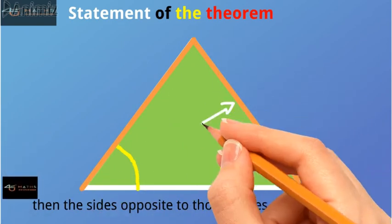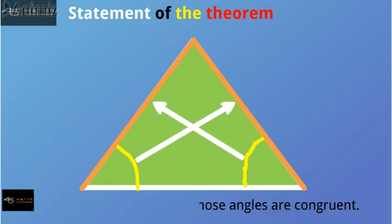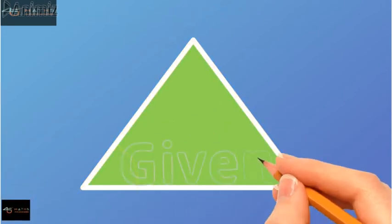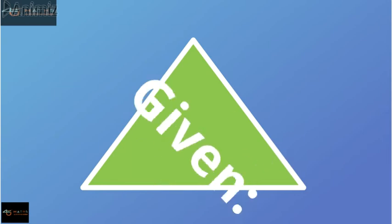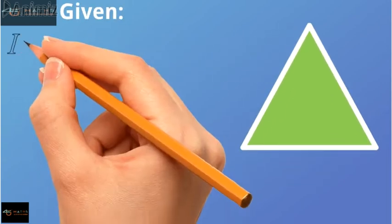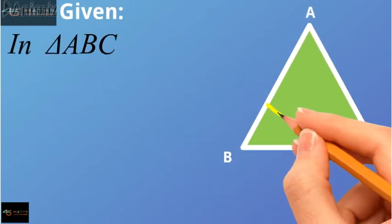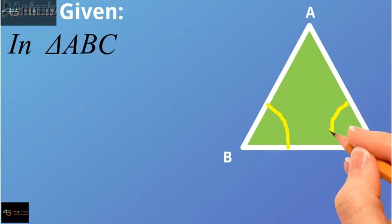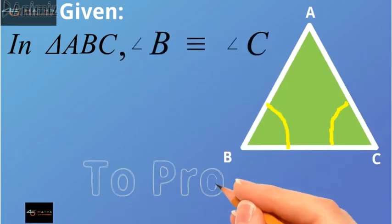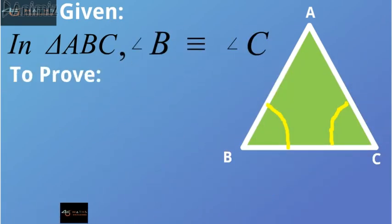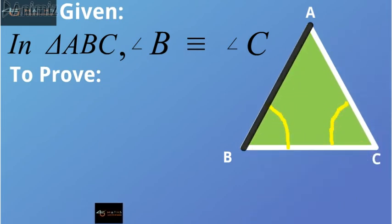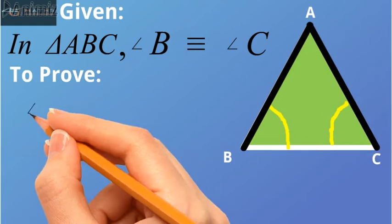Given: Suppose we have a triangle ABC in which angle B is congruent to angle C. To prove: We need to prove that side AB is congruent to side AC.